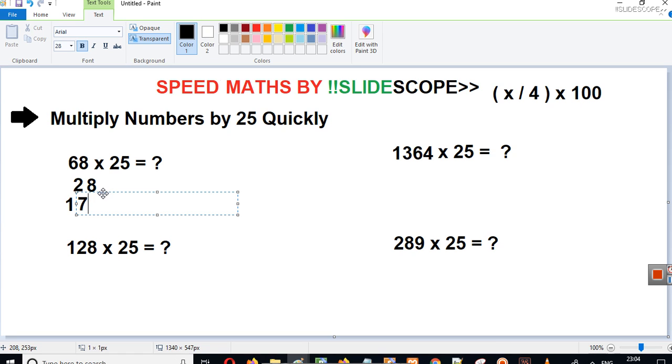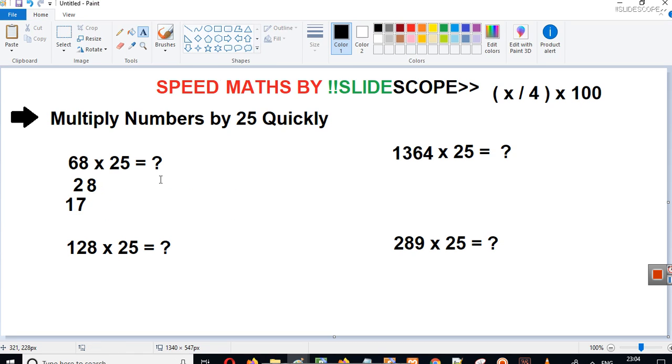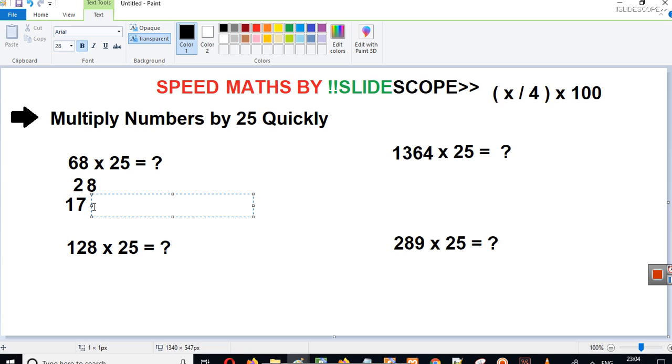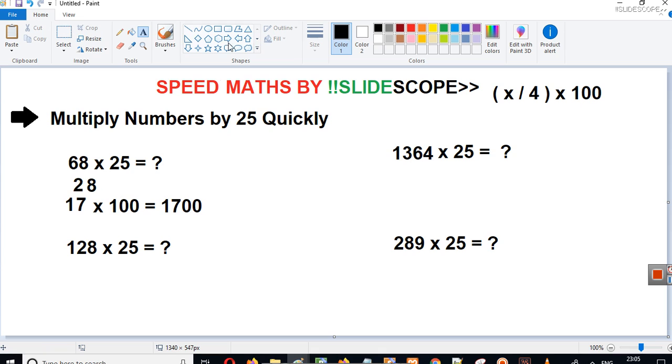So really easy. So we are not just learning how to multiply by 25. We are also learning how to divide by 4 quickly. So 68 divided by 4 is 17. And now just multiply 17 by 100. So it is 1700. So the answer for 68 multiplied by 25 is 1700.